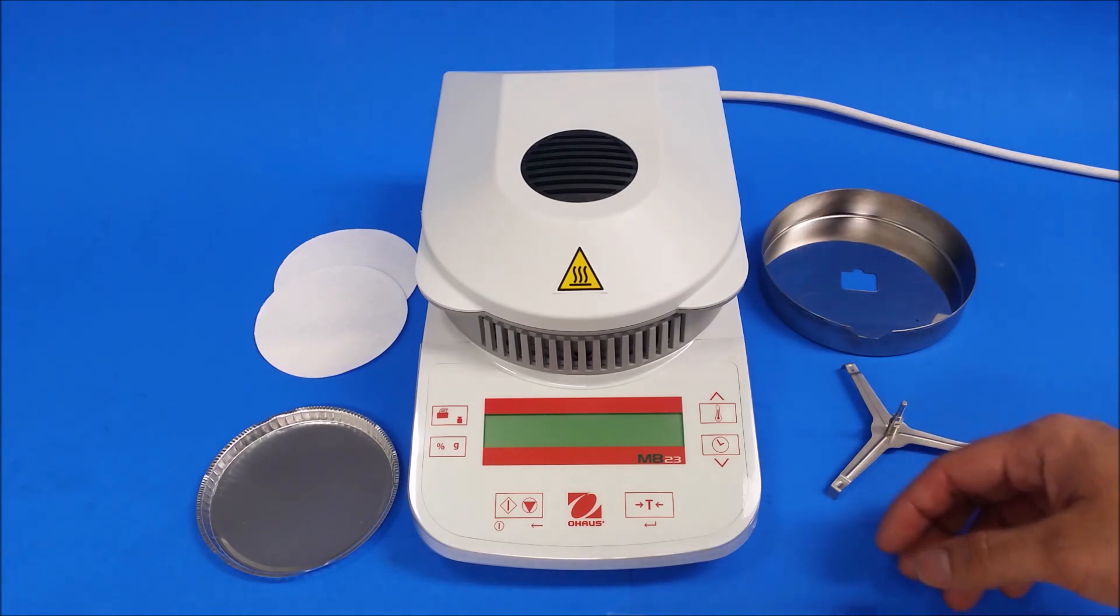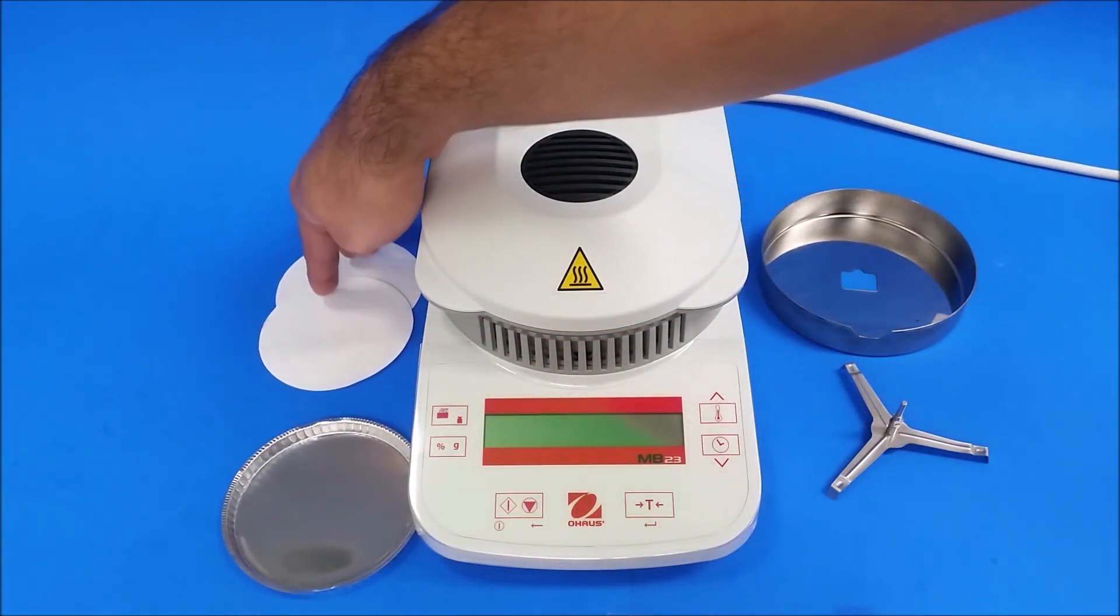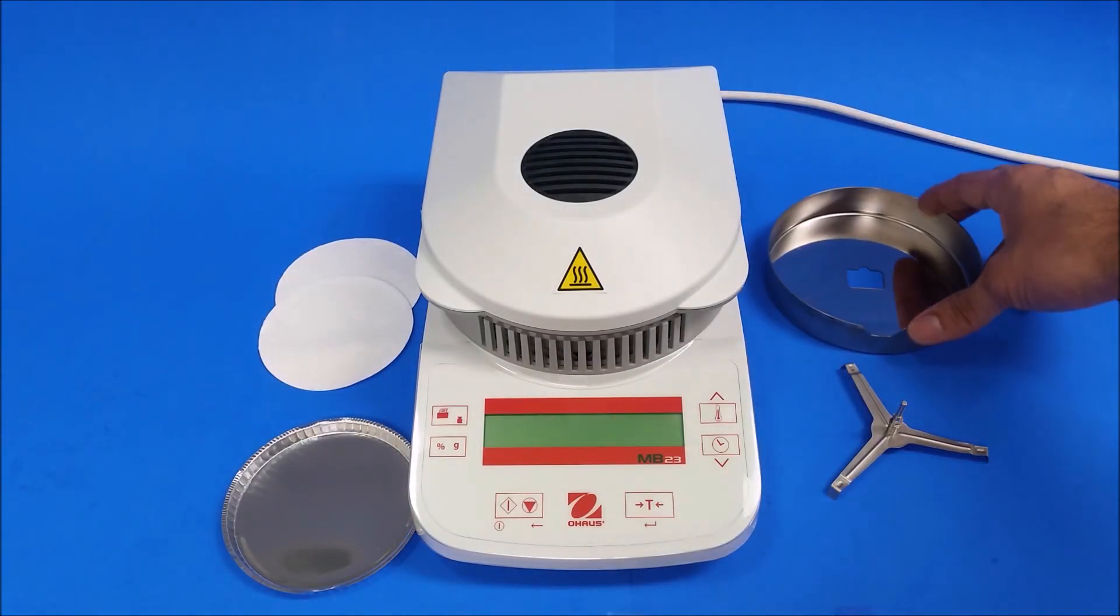First, you're going to need an aluminum dish and two pads, and you're going to need your original parts as well that's going to go in the unit.